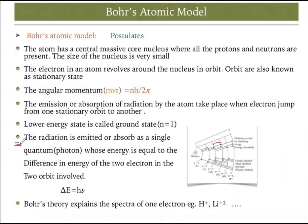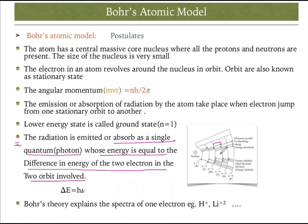The radiation emitted or absorbed is a single photon whose energy equals the difference in energy between the two orbits involved. Whenever there is absorption or emission between two energy states, we take the energy difference — given by ΔE = hν.